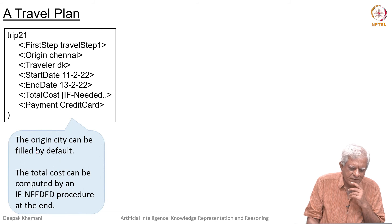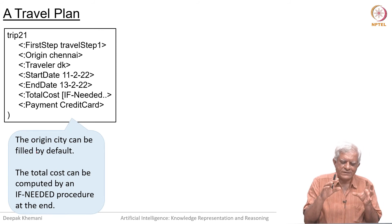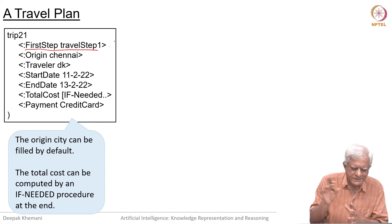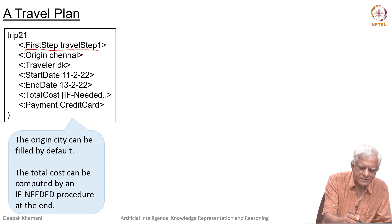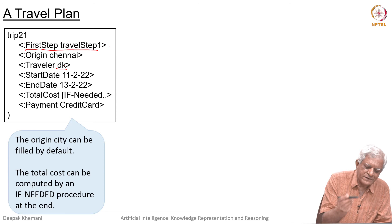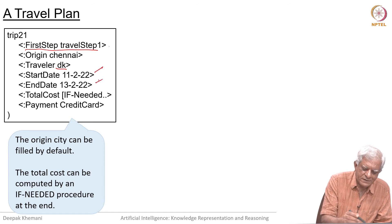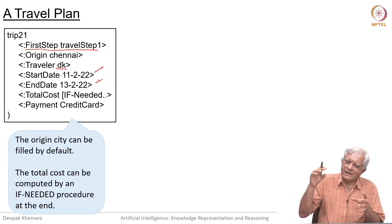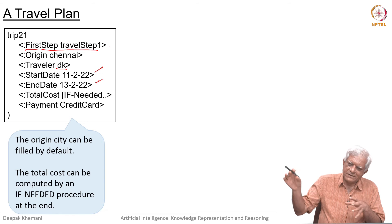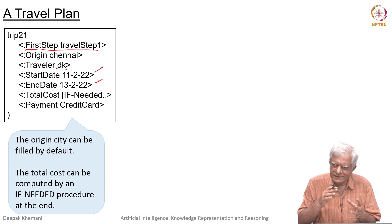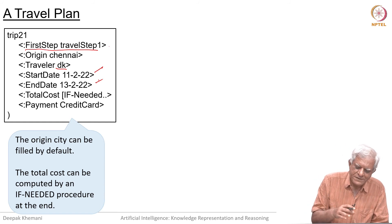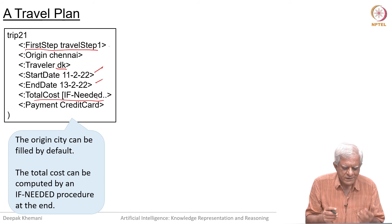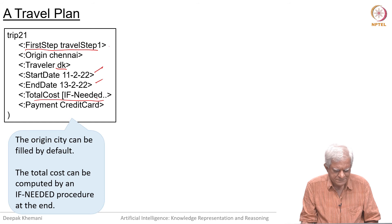Let us say this is a trip called trip 21, which is the high-level thing that covers the whole trip. It begins with the first step which will point to that segment, and by default, if this is for me, the origin is in Chennai. I fill in the start date, and the return date is filled up after I finish planning my trip — saying I will start from here, go there, stay for two days, go somewhere else, and then return home. Then the system should create all the relevant frame instances and create this whole structure. At the end, it can compute the total cost and talk about payment methods.